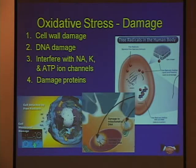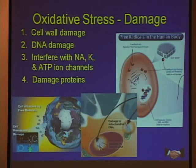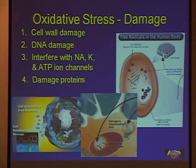One is that it damages the phospholipids in the cell membranes, so I can damage or break down the cell membrane of a cell. I can also damage the DNA. I can also interfere with the sodium, potassium, and the ATP ion channels associated with energy production, so it can destroy my ability to have energy or tissue energy.